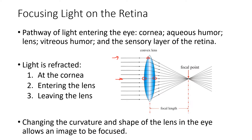With a convex lens the light rays are converged and reach a focal point where the rays cross over. If we change the shape of the lens — flatten it out — we don't get as much convergence. If we squish it, we get more curvature and more convergence. So changing the shape of the lens allows us to shift the focal point, and that is how we focus on objects that are close or far away.